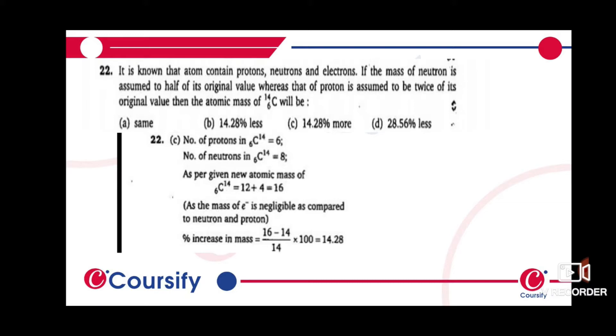Number of protons in carbon is 6, number of neutrons is 8. As per the new atomic mass, in your C-14, the neutron mass will be half and your proton is twice.